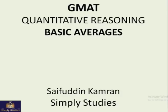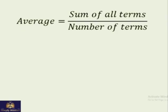Today we will do basic averages. Average is also a popular topic in GMAT quant, so let's understand what is an average. Average, as you might know, is equal to sum of all terms divided by the number of terms. So this is average of some terms.